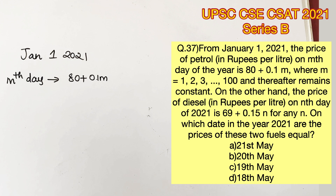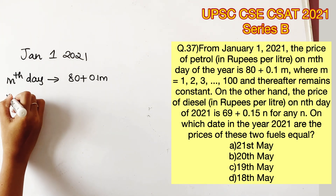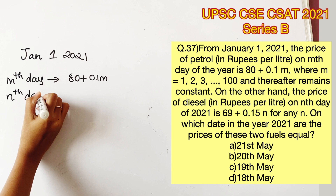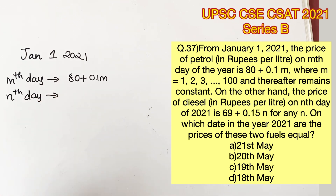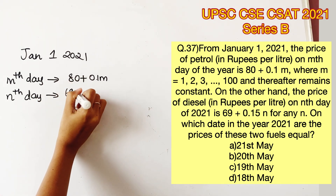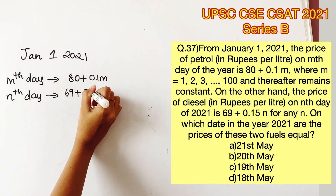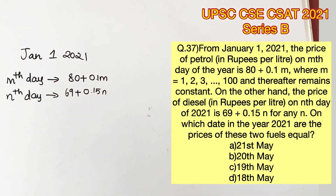January 1st will be considered as m=1, January 2nd as m=2, January 3rd as m=3, and so on. So m only extends till the 100th day of the year. After the 100th day, the price is going to be constant. On the other hand, the price of diesel on the n-th day of 2021 is 69 plus 0.15n.